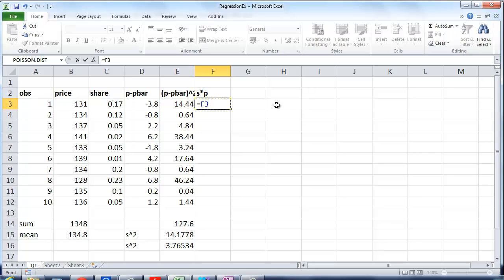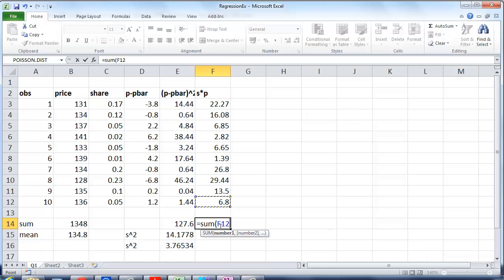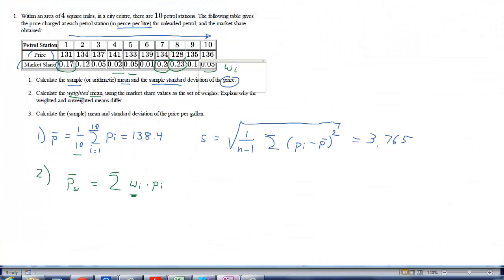Let's go to Excel and do this. So what we want is basically share times price. So let's calculate that for each. So we have price times share. Copy that down. And now all we need is the sum of all these. And what we get is 132.6. So the result here is going to be 132.6. And you can see these averages are quite different.